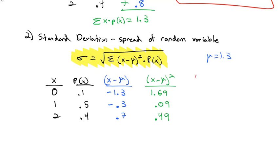But then the formula says we need to take that square of the difference and multiply it by the individual probabilities. So we'll take that green column times the second black column. 1.69 times 0.1 is 0.169. 0.5 times 0.09 is 0.045. And 0.4 times 0.49 is 0.196.